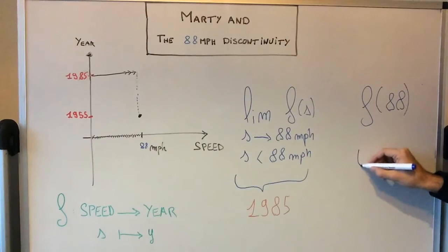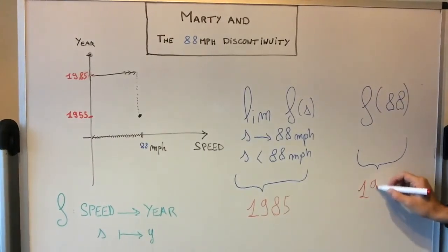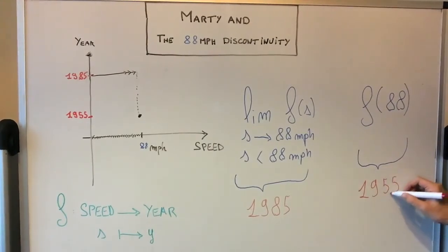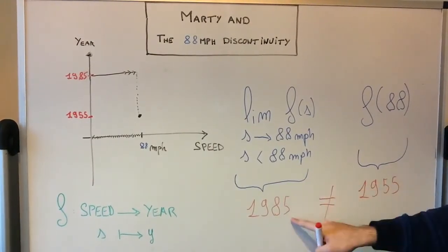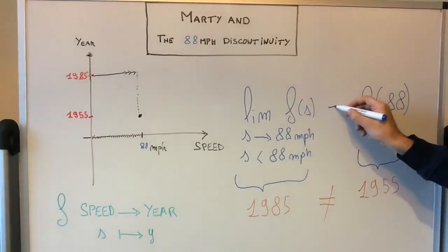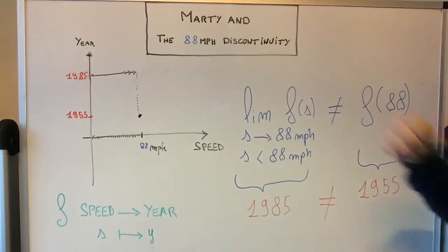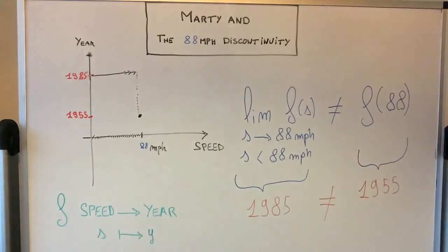So this guy here is 1955. And 1985 is different from 1955. Meaning that this limit is different from the value at the point. Discontinuity. Discontinuity.